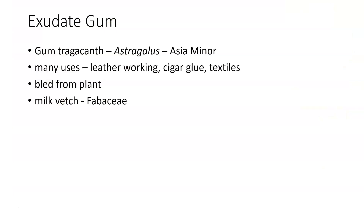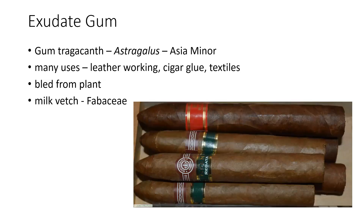Gum tragacanth comes from Astragalus-type plants, mostly out of Asia Minor, and has many uses. Main uses include leather working — it is applied to the outside of leather to hold it together. It is also used in producing cigars as the glue that keeps them from unwrapping. It is bled from the plant, then collected and processed. Cuban cigars, for example, are glued together with this material.